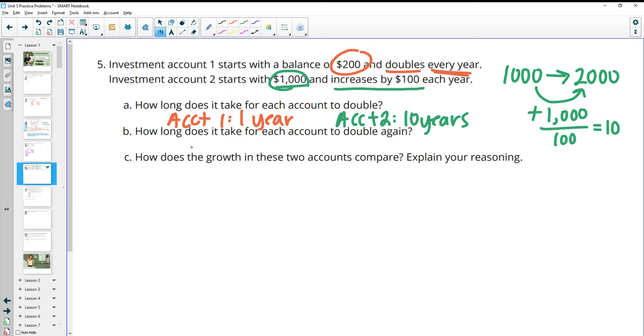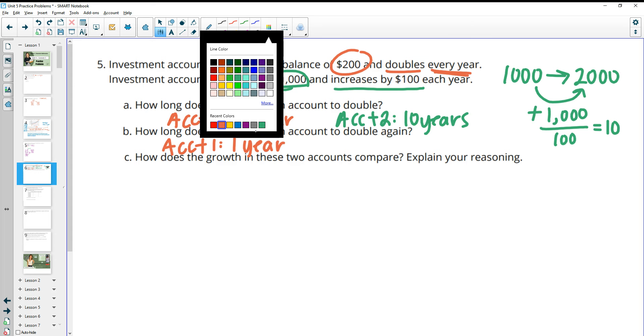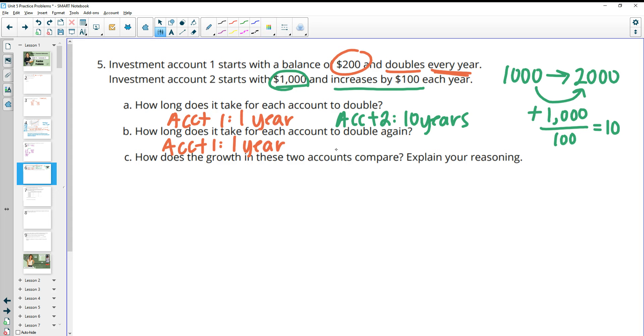Part B says, how long will it take each account to double again? So remember, for account 1, this is doubling every year, so it's just going to double in one more year. Where account 2 now has $2,000 in it. So now we have to figure out when this account is going to add another $2,000, right? To double it, have to add itself in again. So then we're going to have to divide that $2,000 by $100 to figure out that that's 20 more years. So we'd have to do 20 more years before that one would double.